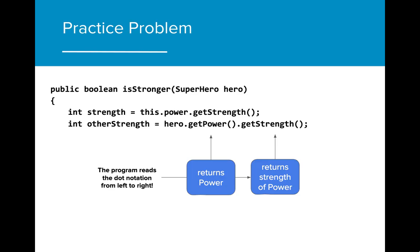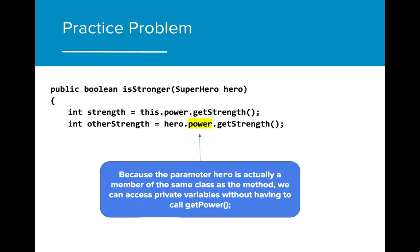The first method called on the object hero is getPower. This will return the power object to the program. The next method called is getStrength. GetStrength is being used on the power object that has been returned from getPower and will return the strength value stored in that power object. Because the parameter hero belongs to the superhero class and is being called within the superhero class, we can actually access the private variables of hero without having to call getPower. In this case, we can just write hero.power to access the instance object power and then call getStrength directly on the power object.